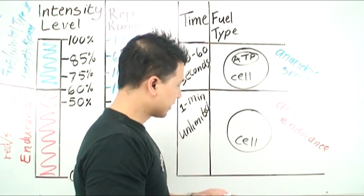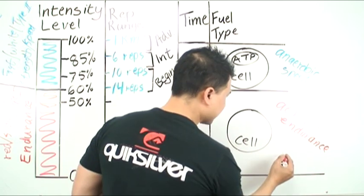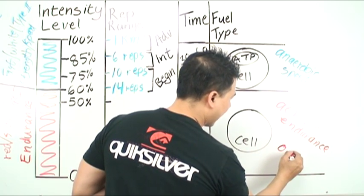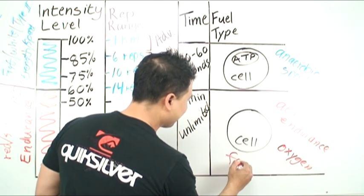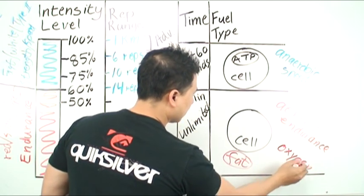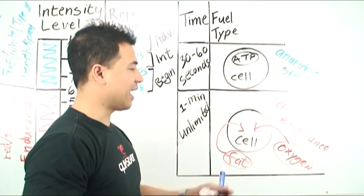Keep in mind that the way this cell works is that it takes oxygen out here—the air that we breathe—and it takes the fat right here and it imports it inside the cell, and that's how it burns.